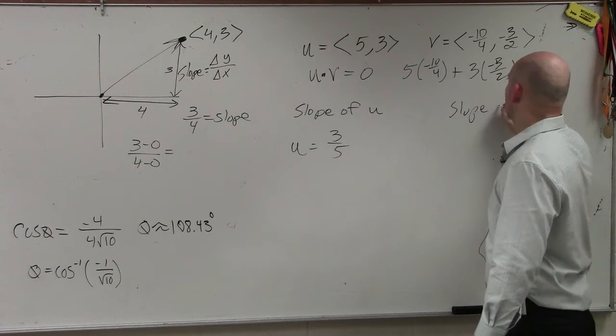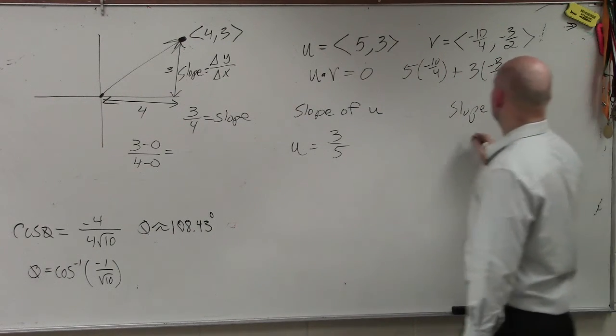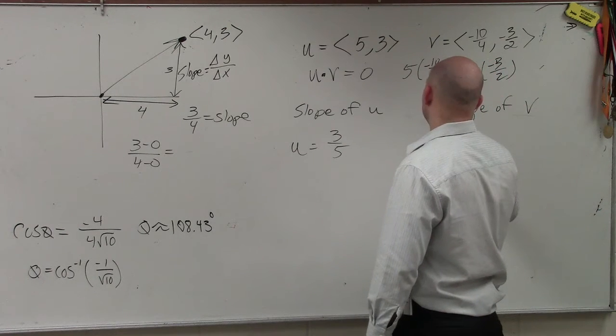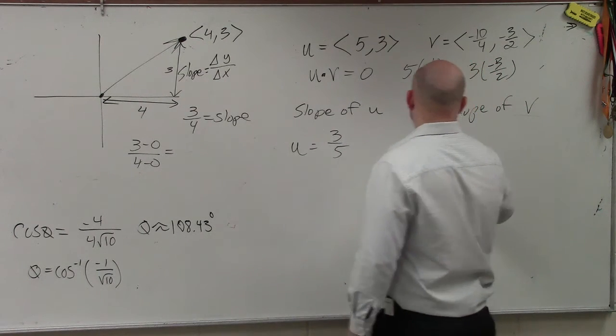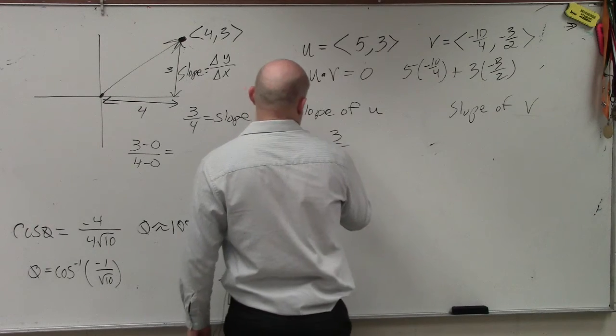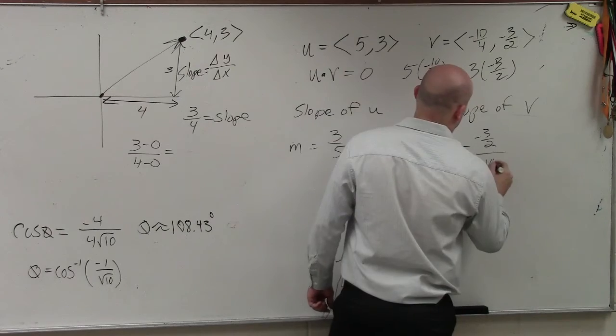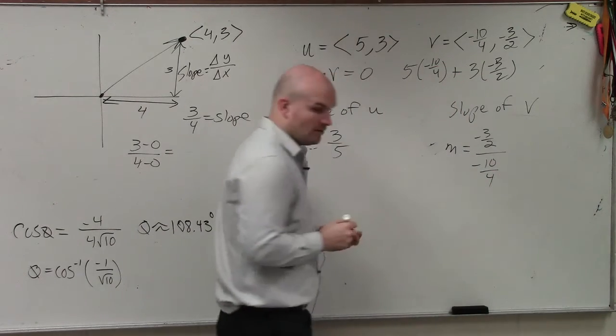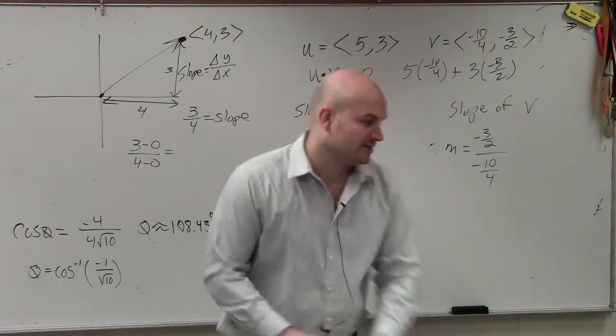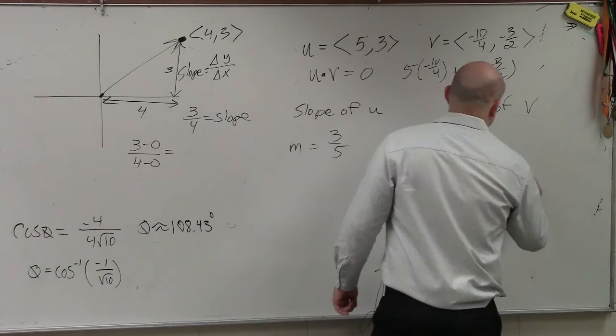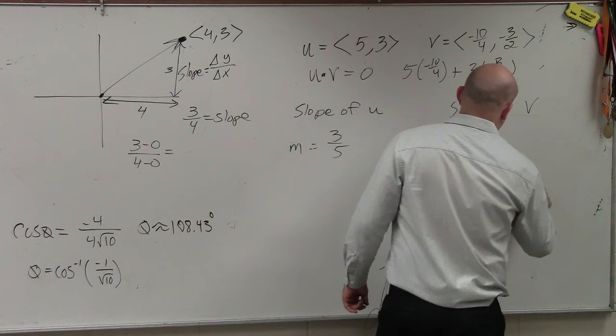So therefore, then I do the slope of v. And in this case, I do, that should be m, not v. So m equals negative 3 halves divided by negative 10 over 4. Well, whenever I have a fraction divided by a fraction, if anything you take out of this class, is we know that we need to multiply by our reciprocals.